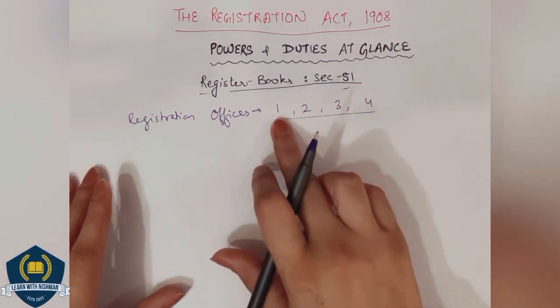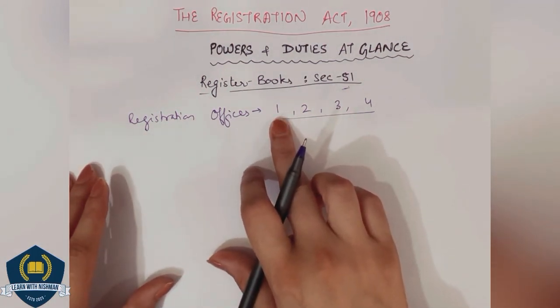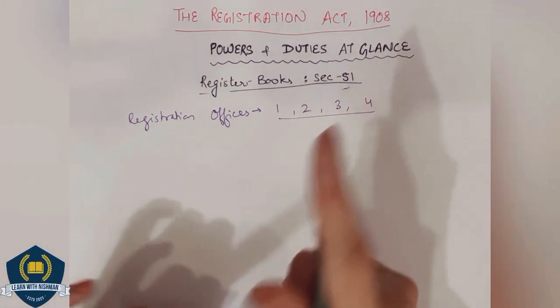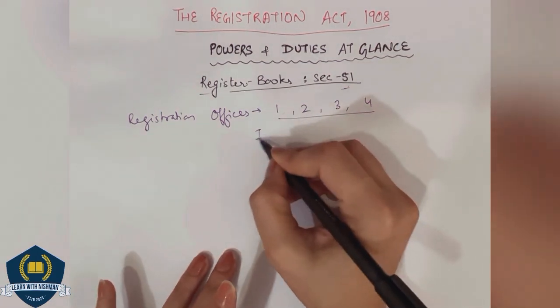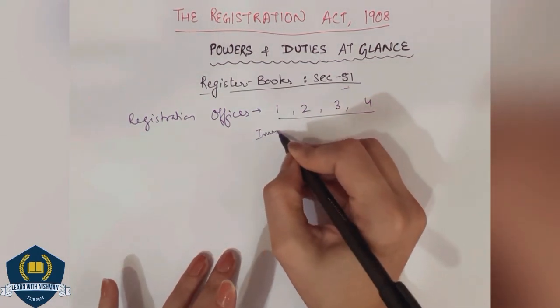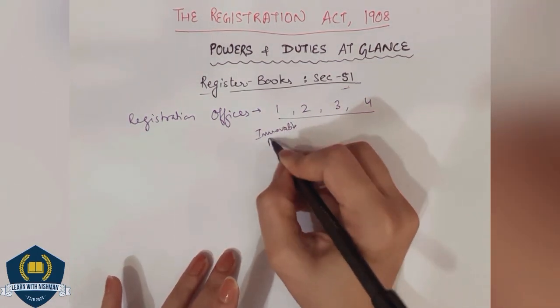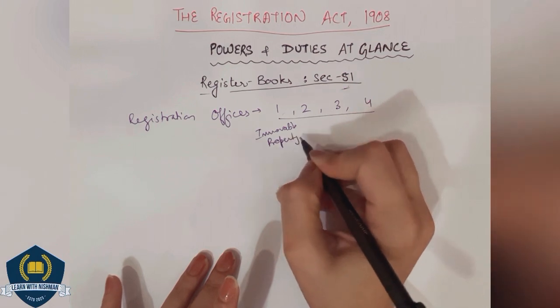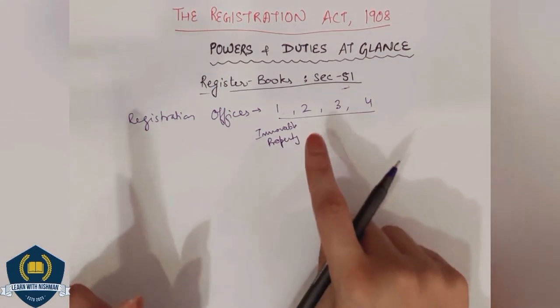Book number 1 basically includes all the documents relating to immovable property. Whatever documents are related to immovable property, we write them in book number 1.